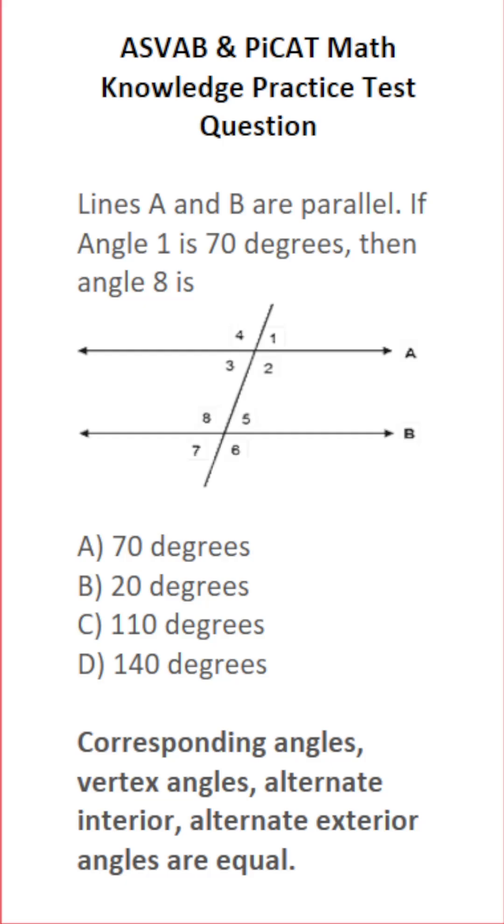This math knowledge practice test question for the ASVAB and PICAT says lines A and B are parallel. If angle 1 is 70 degrees, then angle 8 is.